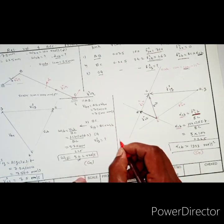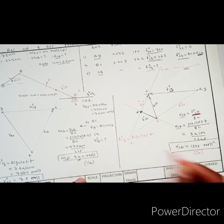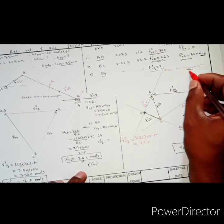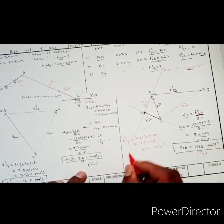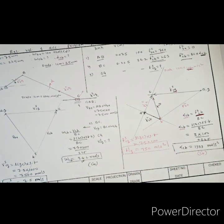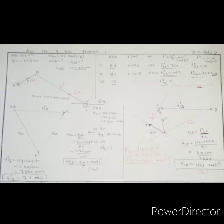The sliding acceleration of slider C is given by the length of vector GC times the scale factor. Measuring vector GC, its length is 7.5 centimeters. So the sliding acceleration equals 7.5 into 100, which equals 750 meters per second squared. We have now determined the unknown velocities and unknown accelerations of the connecting rod and the slider by drawing the velocity and acceleration polygons. This completes the solution. Thank you.